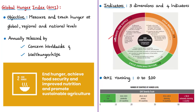Based on these indicators, the index ranks countries on a 100-point scale where zero is the best (no hunger) and 100 is the worst. Countries are classified into five categories: low, moderate, serious, alarming, and extremely alarming. In 2019, the index was calculated for 117 countries. The Central African Republic scored above 53, becoming the only country in the extremely alarming category. Zambia, Madagascar, Chad, and Yemen fell in the alarming category.